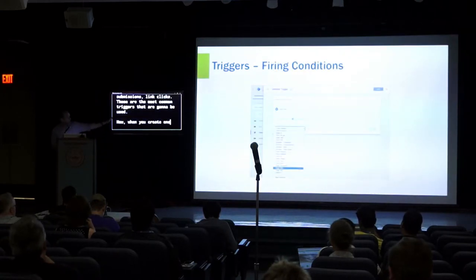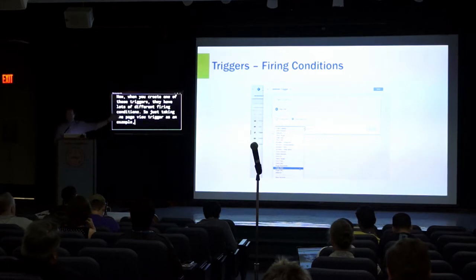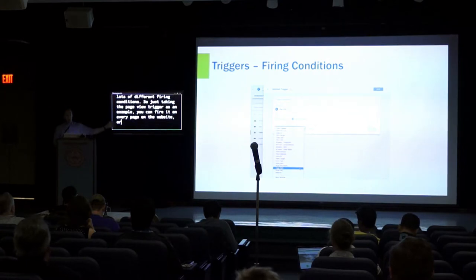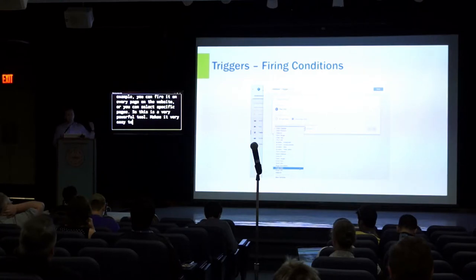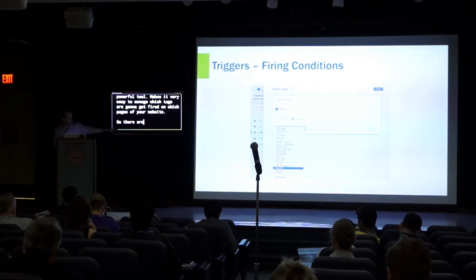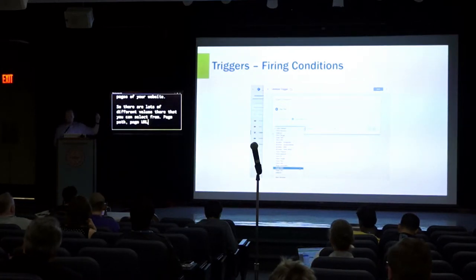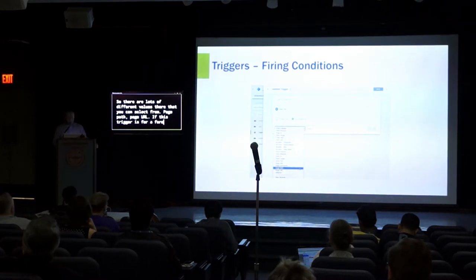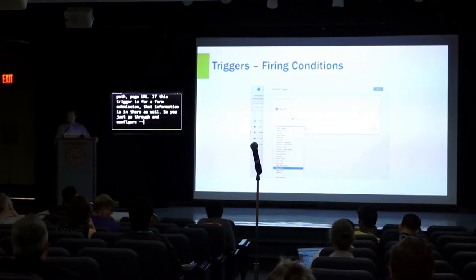When you create one of these triggers, they have lots of different firing conditions. Just taking the page view trigger as an example, you can fire it on every page on the website or select specific pages. This is a very powerful tool that makes it very easy to manage which tags get fired on which pages. There are lots of different values you can select from — page path, page URL — and if this triggers for form submission, that information is in there as well.